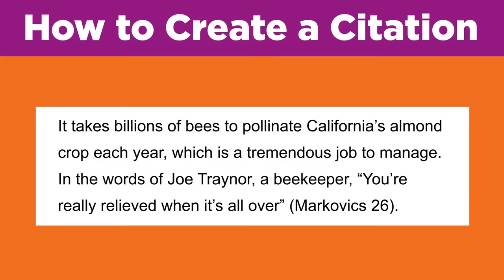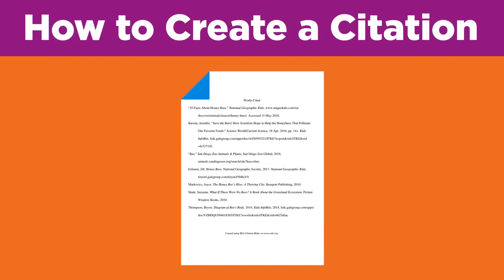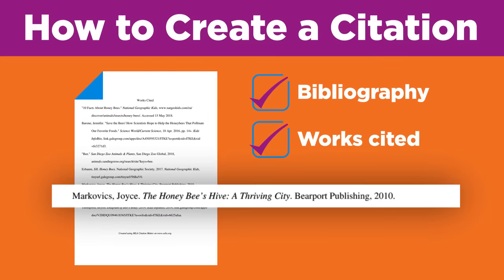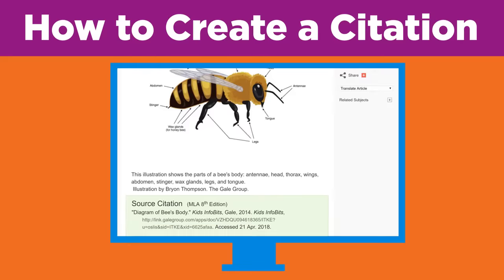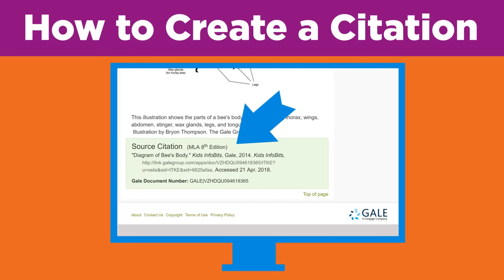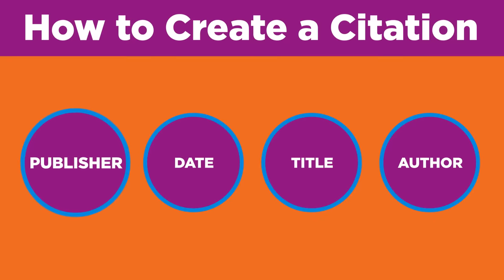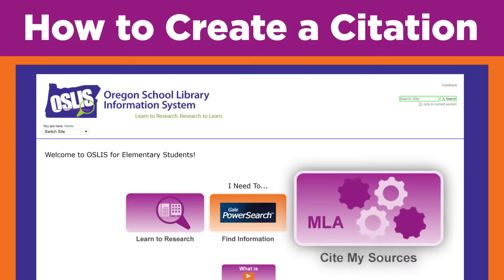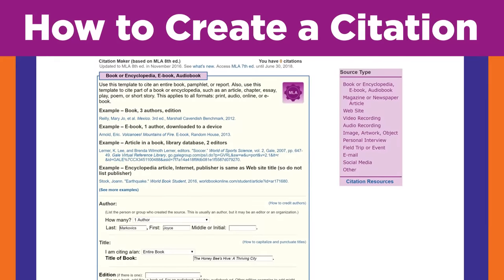For any research project, you must always include an alphabetized list of all of the sources you used. This list is called a bibliography or works cited, and it provides complete information for each source. Sometimes you may find a citation at the end of an article in a library database or online encyclopedia, but most of the time you'll need to make your own citations. There are rules for creating proper citations, like what source details must be included and what order to put them in.